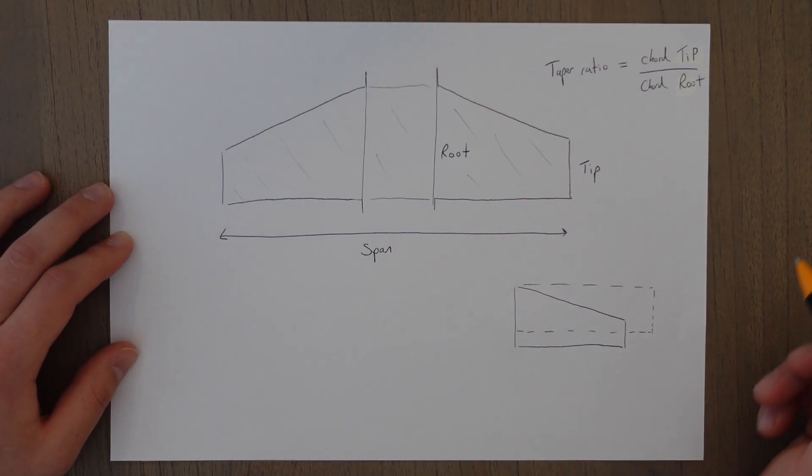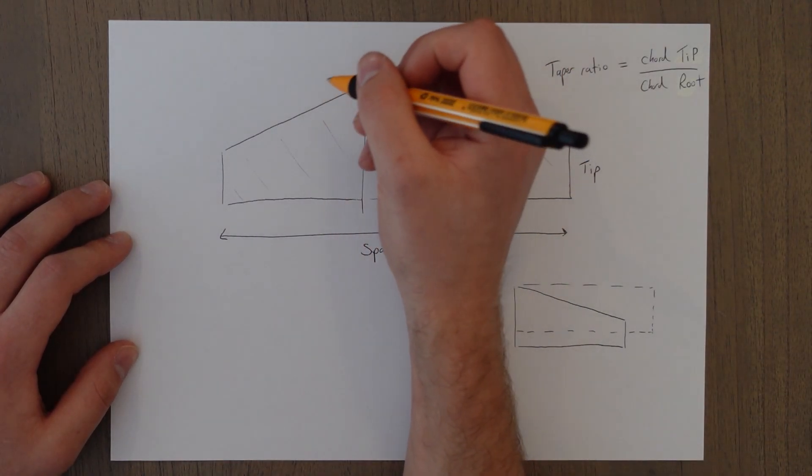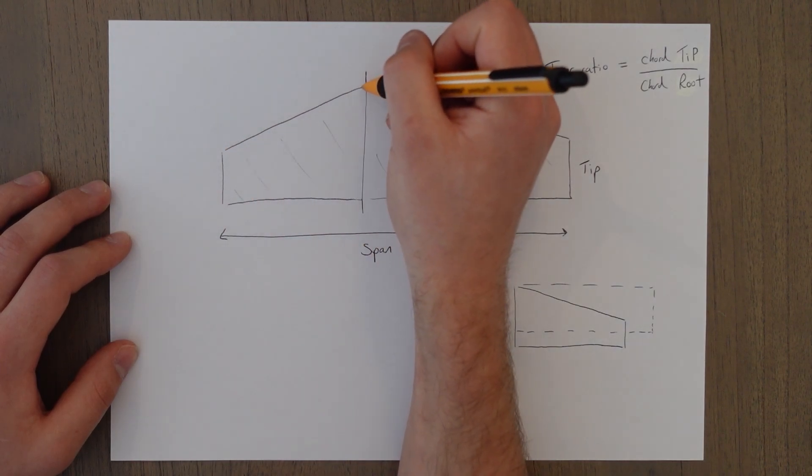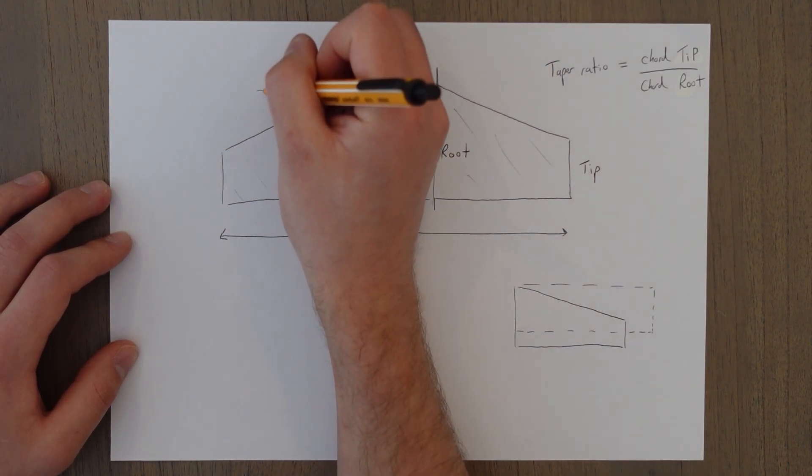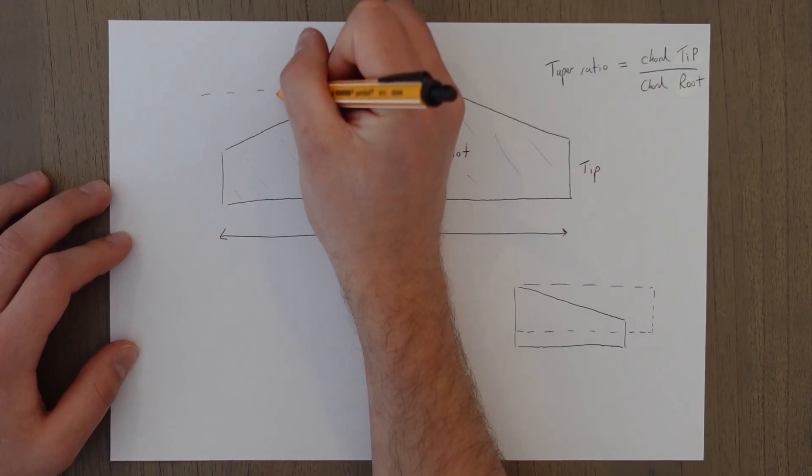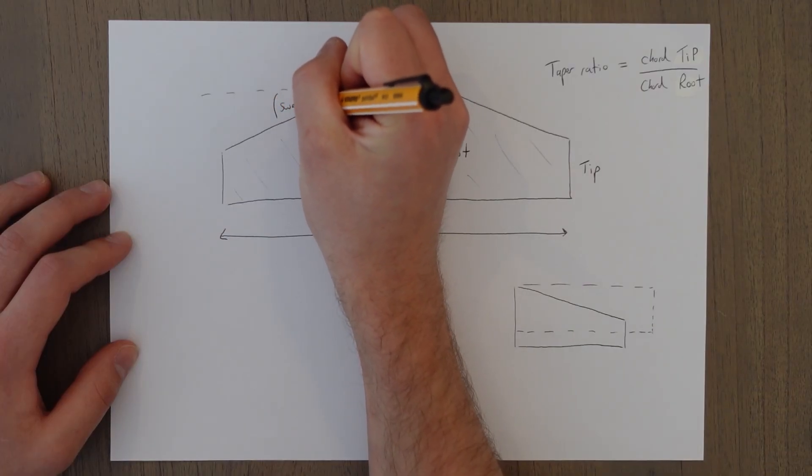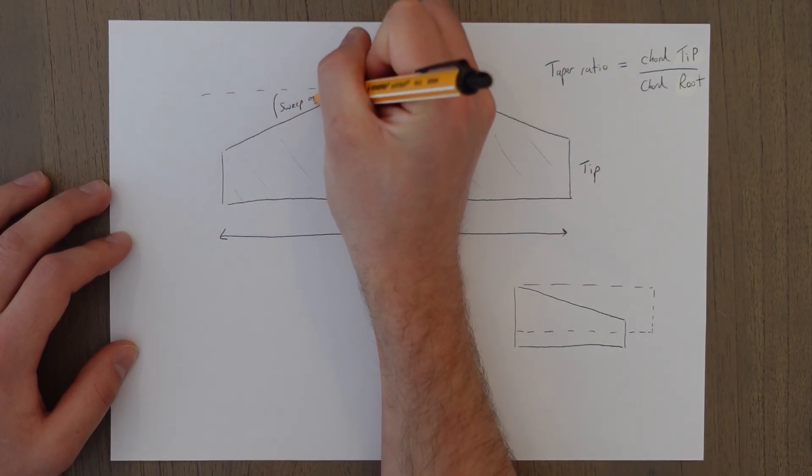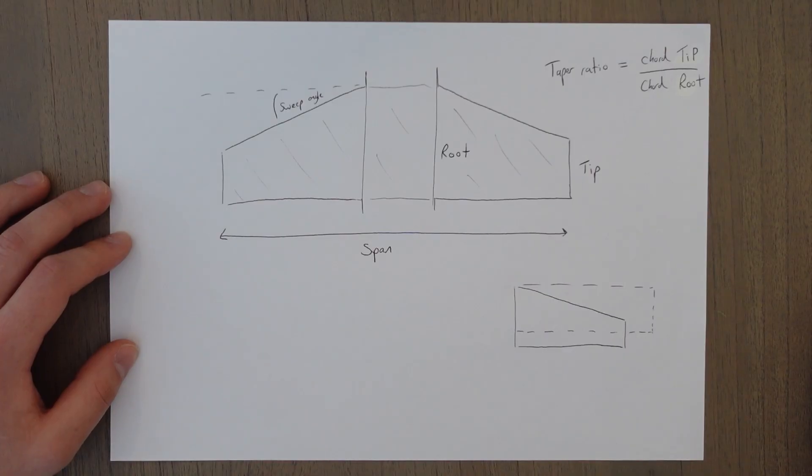The sweep angle is the angle between the leading edge here and the lateral axis of the aircraft, which would be about here. So this angle in here is your sweep angle. This is something you see very commonly on jet aircraft.